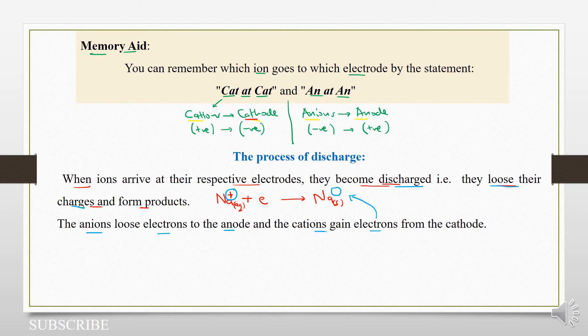However, when you look at anions, we shall have our chloride, and then it will go to the anode and it will lose an electron. So let us write it minus an electron.